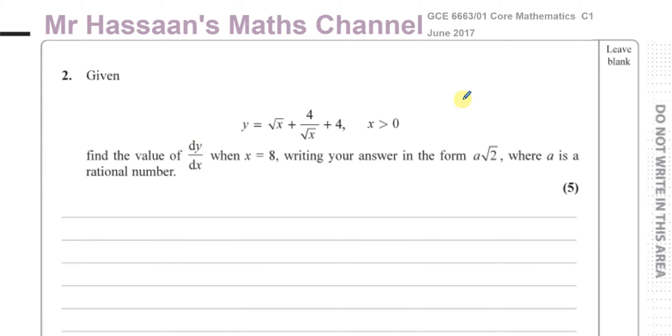You're told that y equals the square root of x plus 4 over the square root of x plus 4, where x is greater than 0. Find the value of dy/dx when x equals 8. First of all we've got to find dy/dx. We have to differentiate this expression. So first we have to get it ready for differentiating by writing it in index form. Right now you have things in surd form, you want to write it in index form.